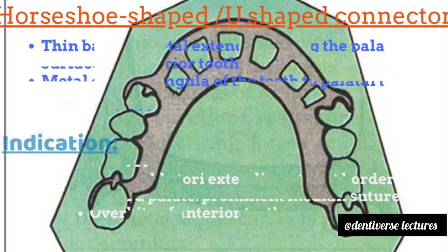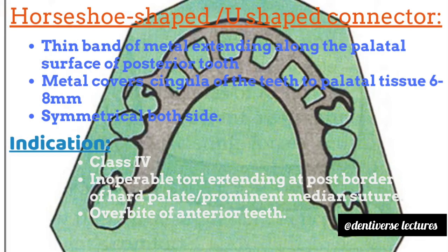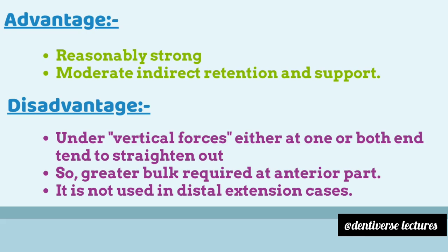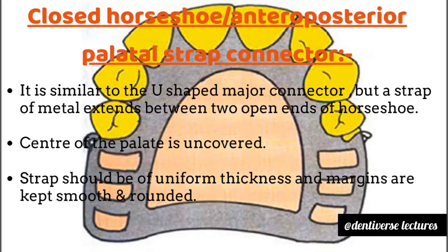Fourth type is the horseshoe or U-shaped connector — a thin band of metal extending along the palatal surface of posterior teeth. Metal covers the cingulum of the teeth to the palatal tissue about 6 to 8 millimeters, and it should be symmetrical on both sides. Indications are class 4, inoperable tori extending to the posterior border of the hard palate, prominent median palatine suture, and overbite of anterior teeth. Advantages: it is reasonably strong with moderate indirect retention and support. Disadvantages: under vertical force at one or both ends it tends to straighten out, requiring great bulk at the anterior part, which leads to patient discomfort and affects phonetics. It cannot be used in distal extension cases.